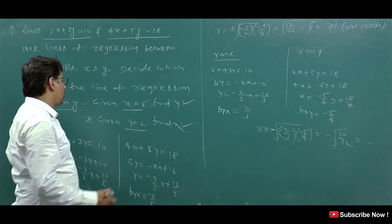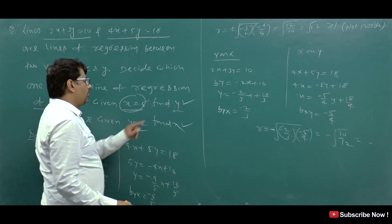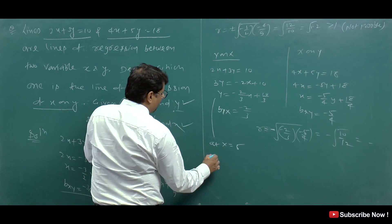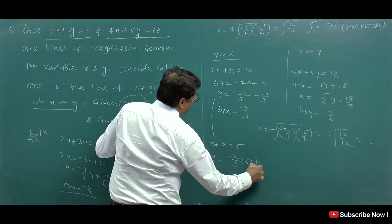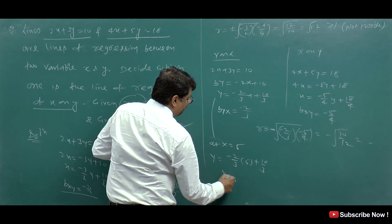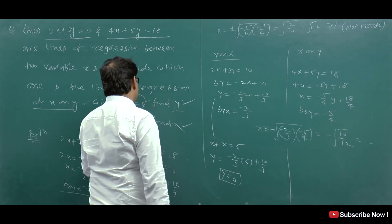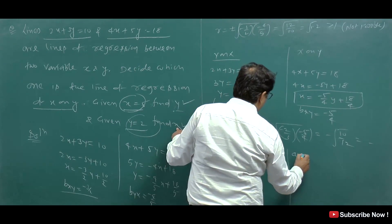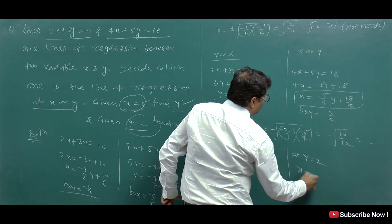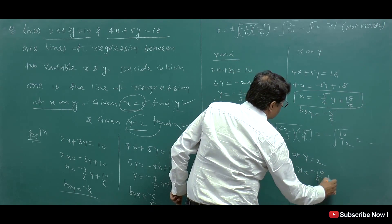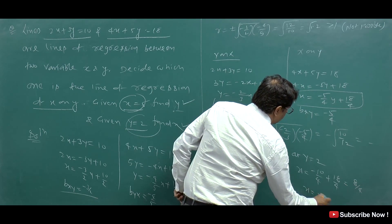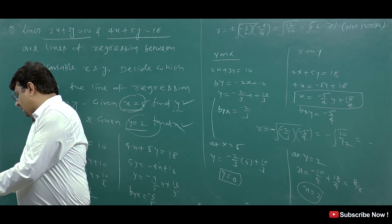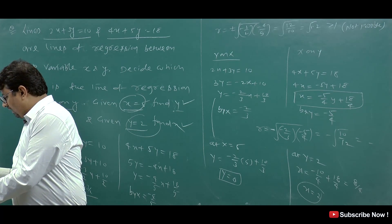So we reverse: equation 1 (2x + 3y = 10) is y on x and equation 2 (4x + 5y = 18) is x on y. Now we can verify using given coordinate conditions: when x = 5, y = 0, and when y = 2, x = 2. We will solve this type of question here and you can find the R value accordingly. R value has not been left out here.